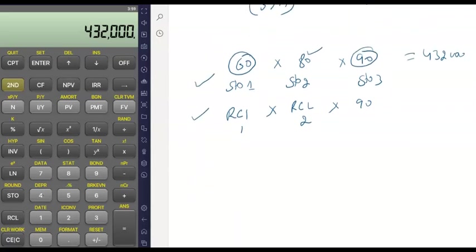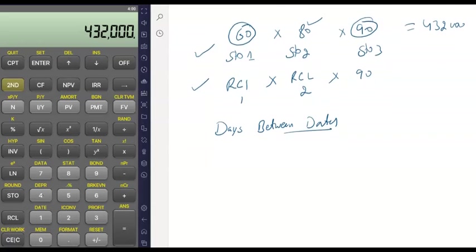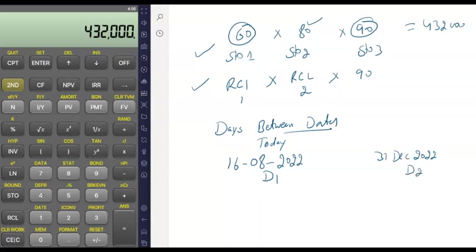Now let's learn another function: days between dates. If you want to calculate the number of days between two dates — for example, today's date is 16 August 2022 (call it D1), and the second date is 31 December 2022 (D2, the year-end) — how do you calculate the days between them?